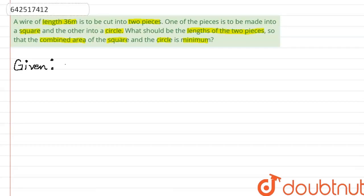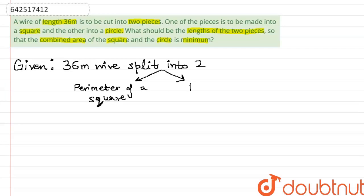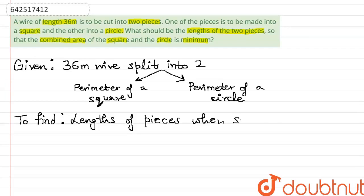We are given a wire of length 36 meters, which has to be split into two. One part forms the boundary perimeter of a square and the other part forms that of a circle. We are supposed to find the lengths of each of these individual parts when the sum of the areas of the square and the circle is minimum.